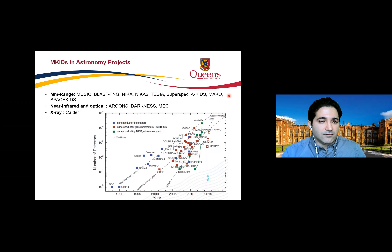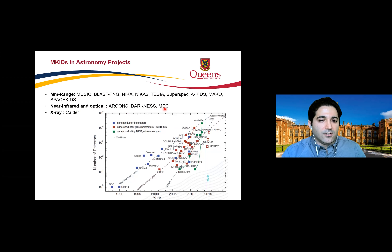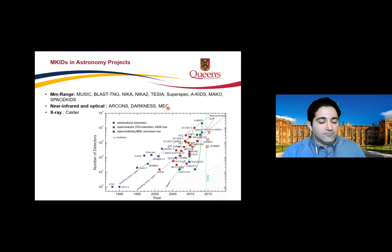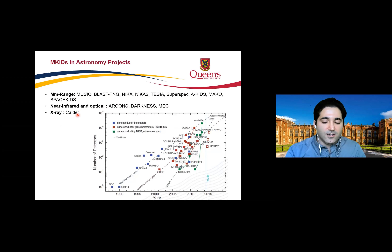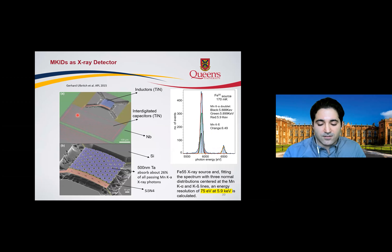Many astronomy projects use MKIDs: for the millimeter range there are CMB projects studying cosmic microwave background. For the optical range, Ben Mazin's group is working on exoplanet research. There are also projects using MKIDs for X-ray detection; one example used a 500-nm thulium absorber and silicon nitride thermal conductance, achieving 75 eV resolution at 5.9 keV (iron-55).